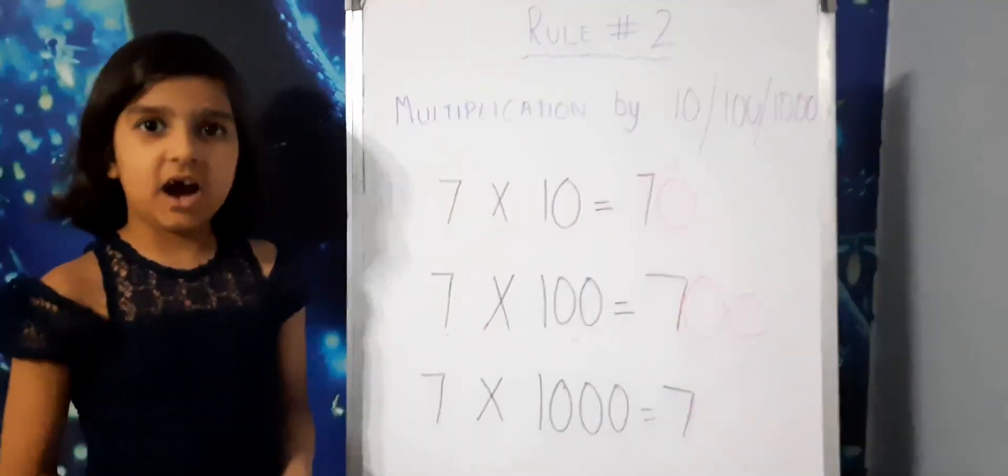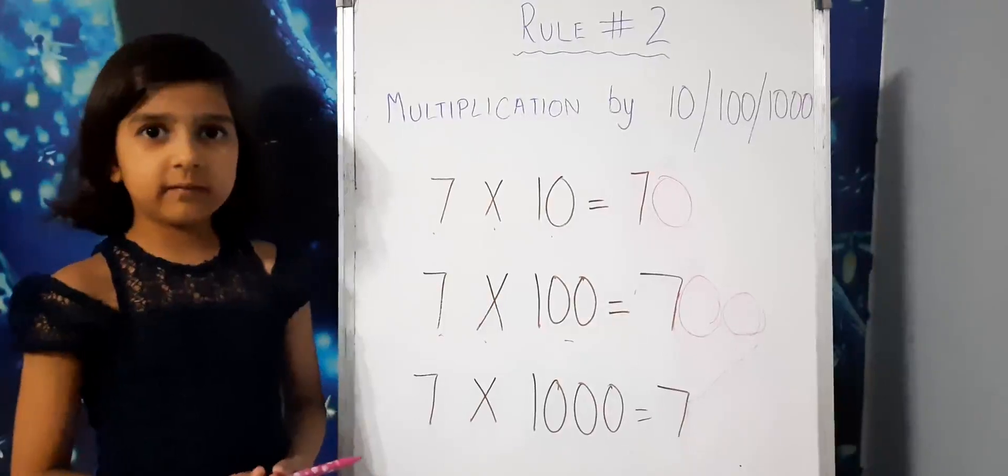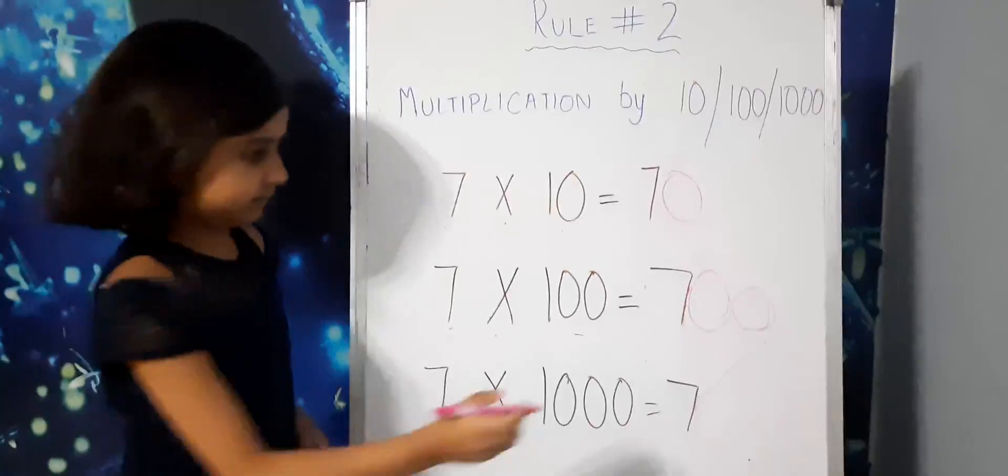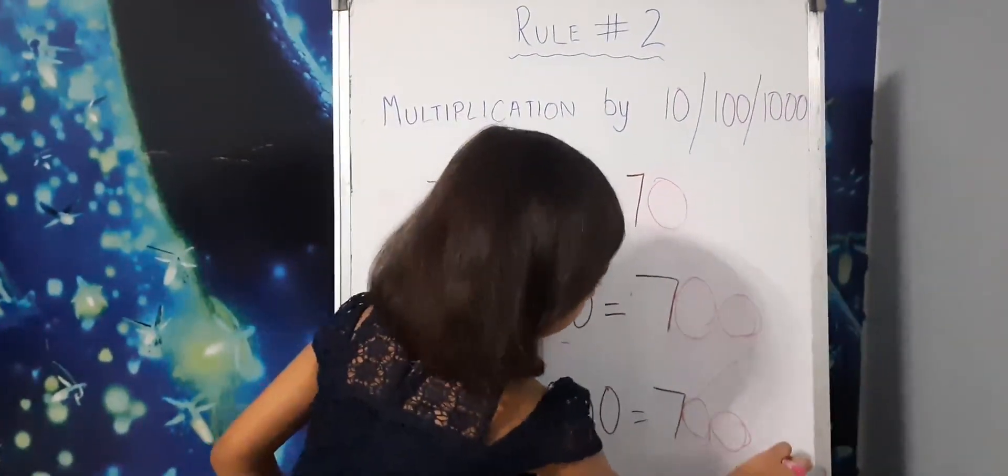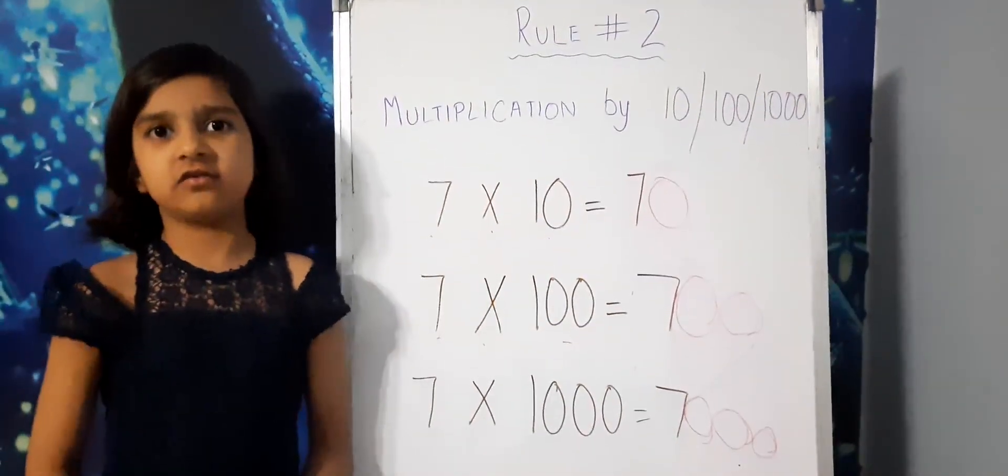The answer will be 7 followed by 3 zeros. The answer will be 7,000.